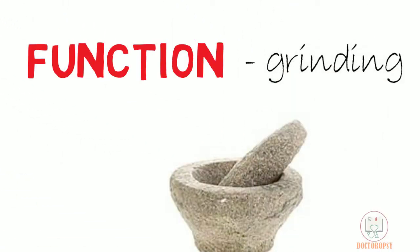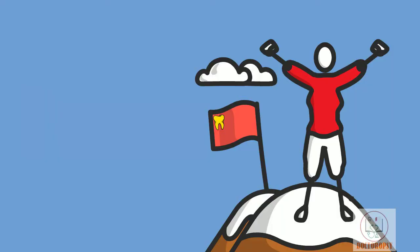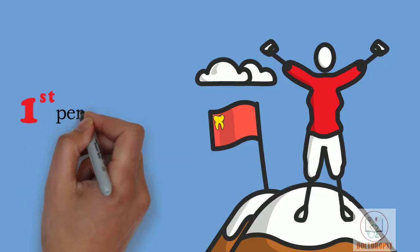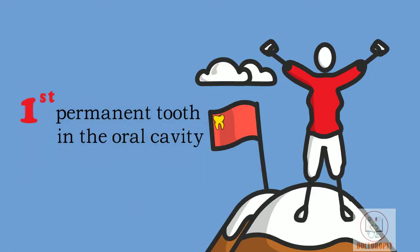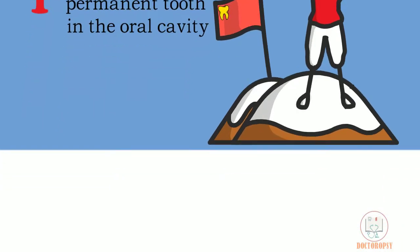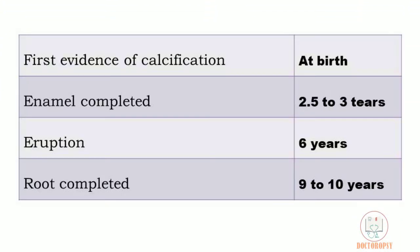The function of mandibular molars is grinding. The mandibular first molar is the first permanent tooth to erupt in the oral cavity, as it erupts before the maxillary first molar. Its age of eruption is 6 years.